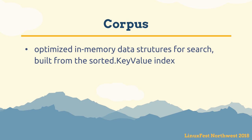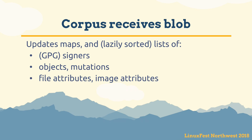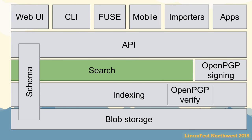One last piece of the index is the corpus — an optimized in-memory version of the index. As soon as index rows are written, the corpus also gets the blob and updates maps and lists, which are lazily reorganized. The corpus maintains all GPG signers, all objects, all mutations, all files with their attributes, and image attributes — everything well organized for fast access. This corpus basically exists as an optimization for the search layer.